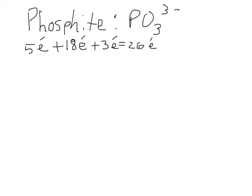So we added the electrons across and we got 26 electrons in total. We added 3 electrons because of the 3- charge that phosphite has.